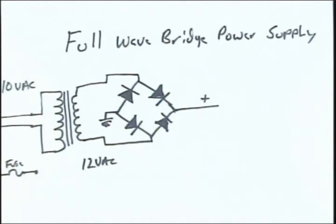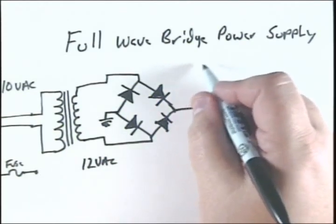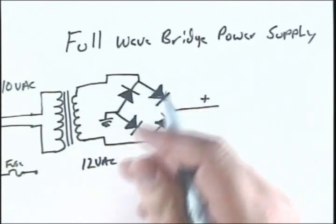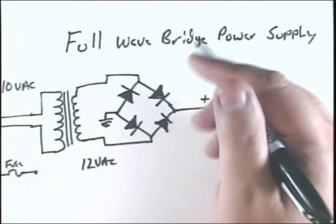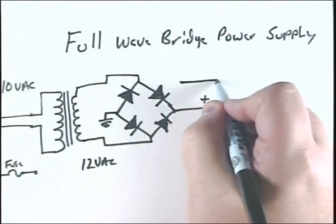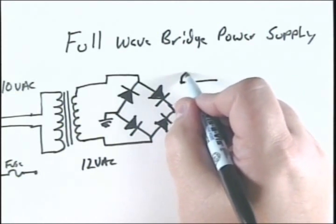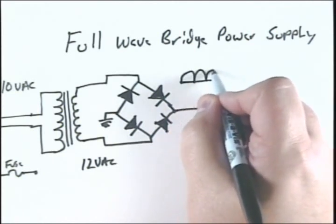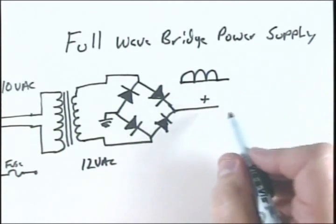With the half-wave rectification, we were only seeing one half. But what this does is it inverts the lower half into a positive direction. So the output would be like this, all going positive.